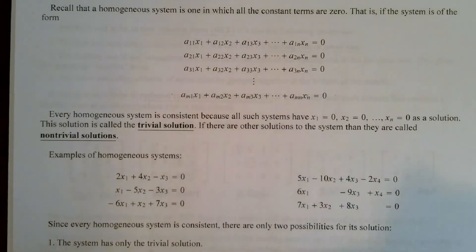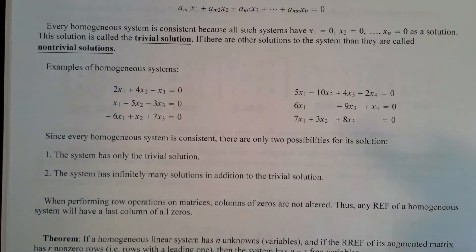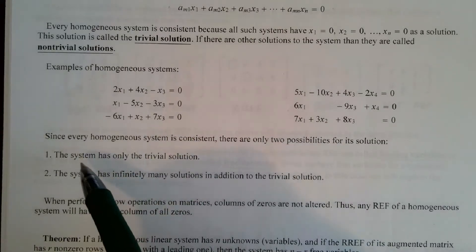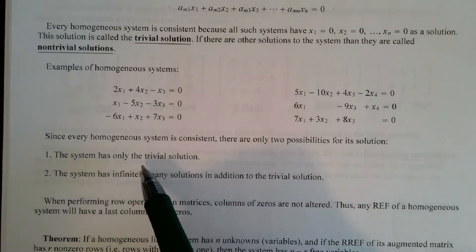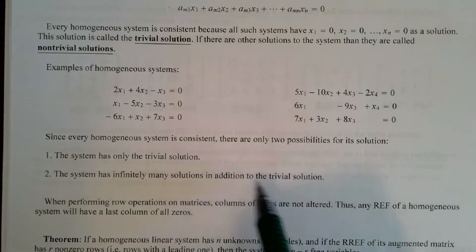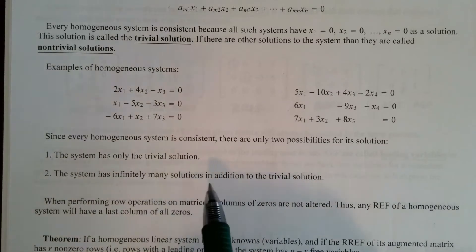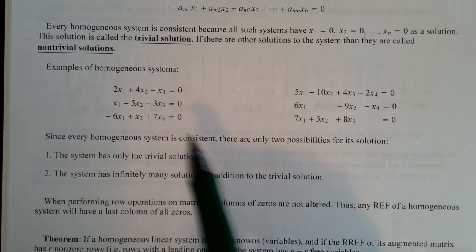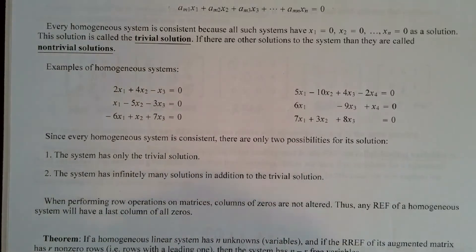So we can't have more than just the trivial solution. Here are some examples of homogeneous systems. Since every homogeneous system is consistent, either it has only the trivial solution — that's one option — or, two, the system has infinitely many solutions that include the trivial solution. One option that is not possible is no solution, because we always have the trivial solution. So the question is: is it the trivial solution only, or is it the trivial solution plus infinitely many non-trivial solutions?